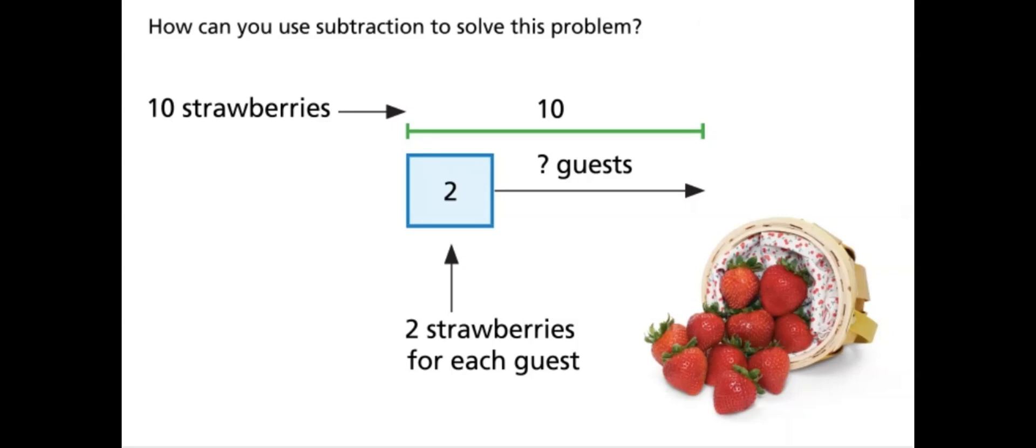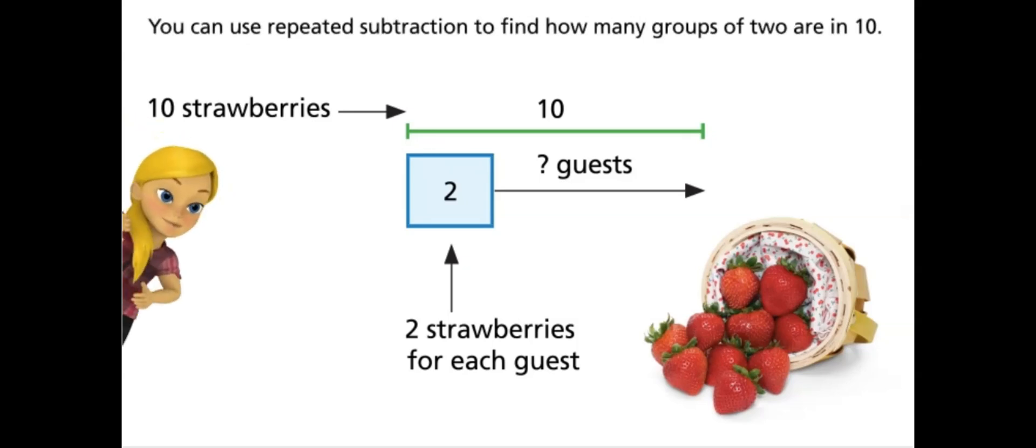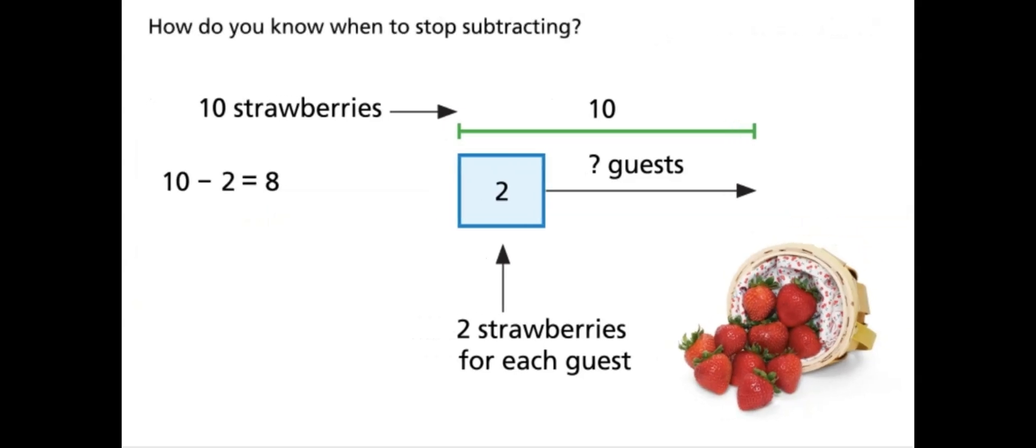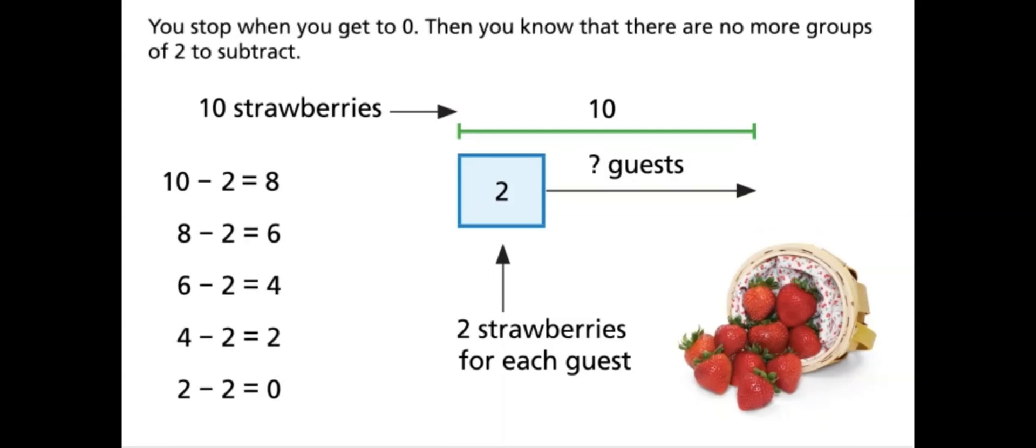How can you use subtraction to solve this problem? You can use repeated subtraction to find how many groups of two are in ten. How do you know when to stop subtracting? You stop when you get to zero. Then you know that there are no more groups of two to subtract.